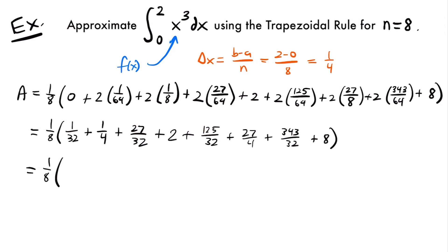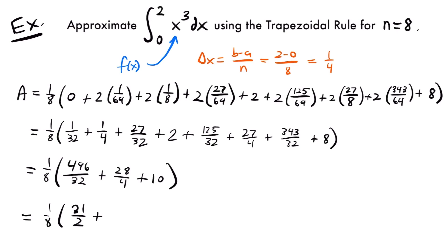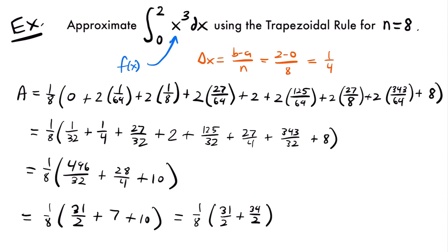Adding the thirty-seconds: 1 plus 27 plus 125 plus 343, all divided by 32, gives 496 over 32. Adding the fourths: 1 fourth and 27 fourths give 28 fourths. And 2 plus 8 adds to 10. Now 496 over 32 reduces to 31 halves. 28 over 4 is 7. So we have 1 eighth times 31 halves plus 17. Writing 17 as 34 halves, we add the numerators to get 65 halves.